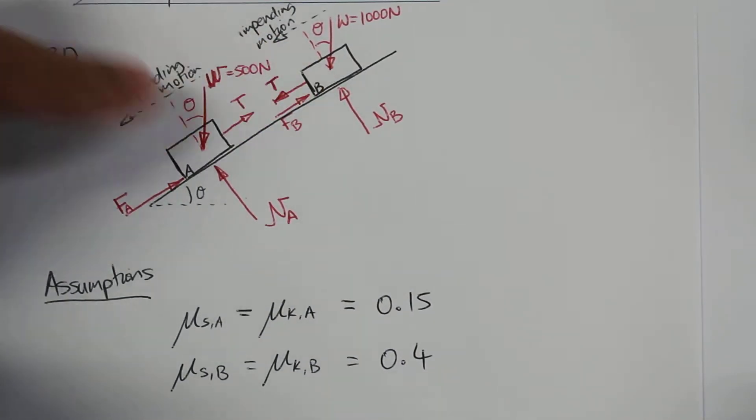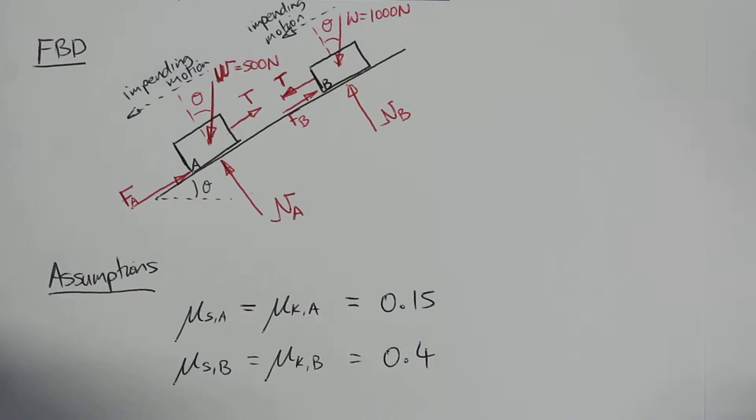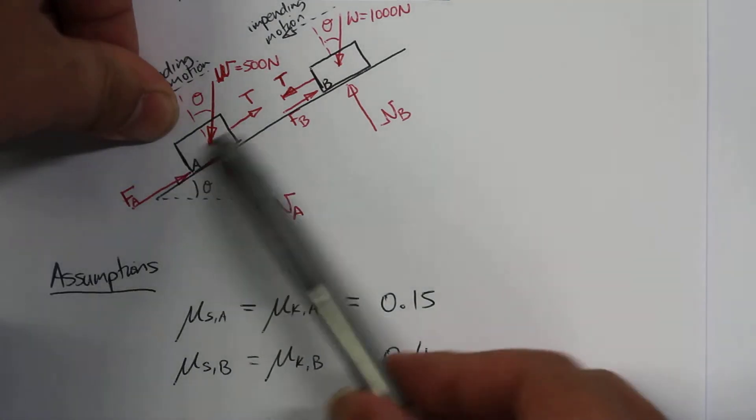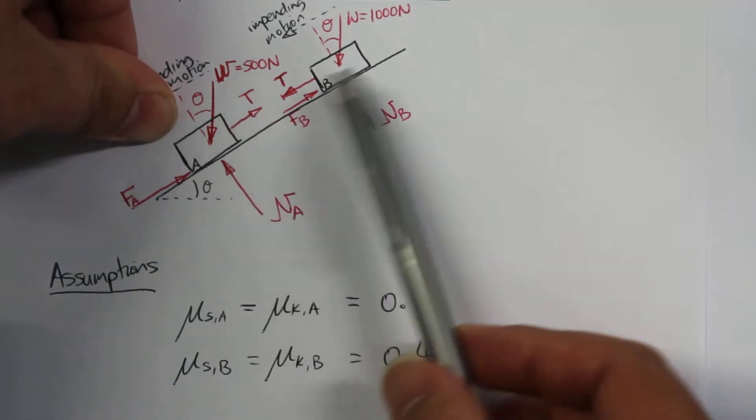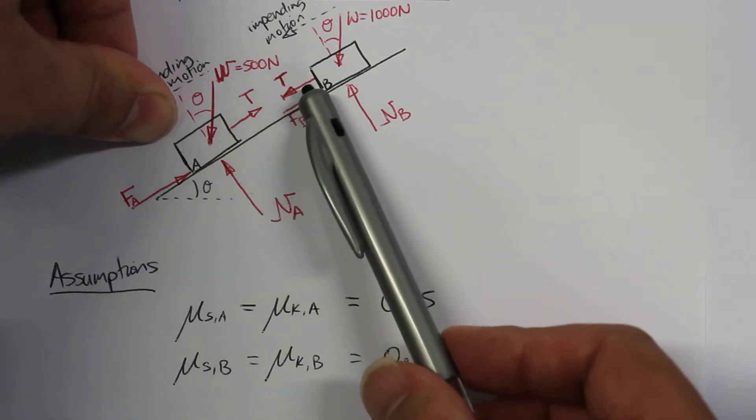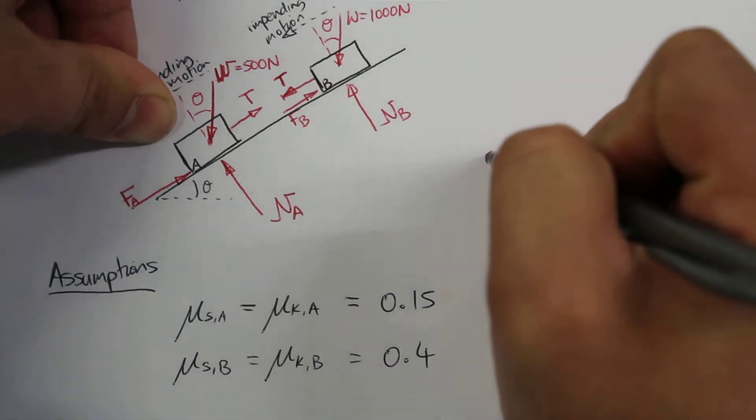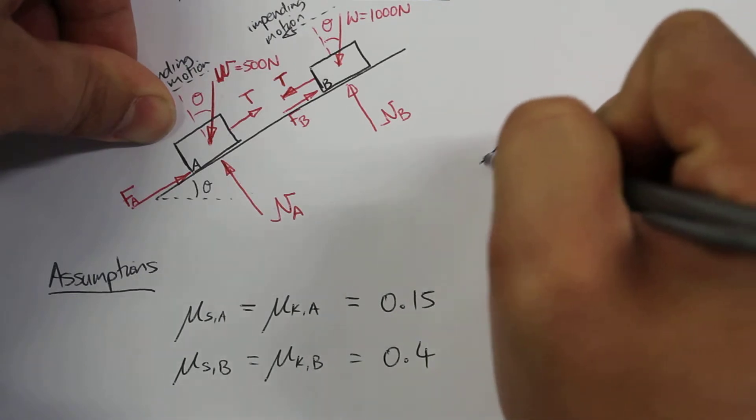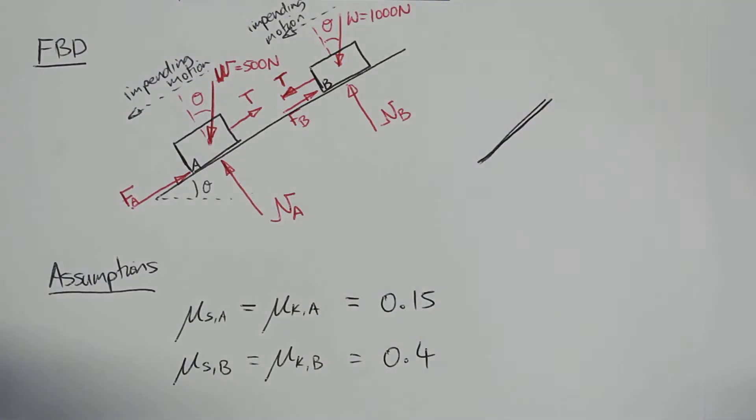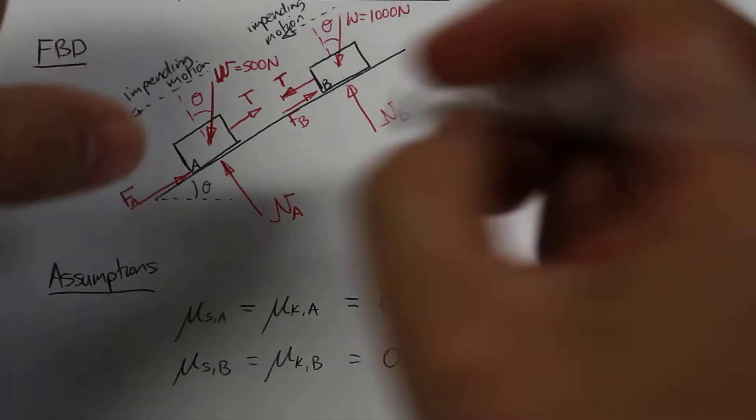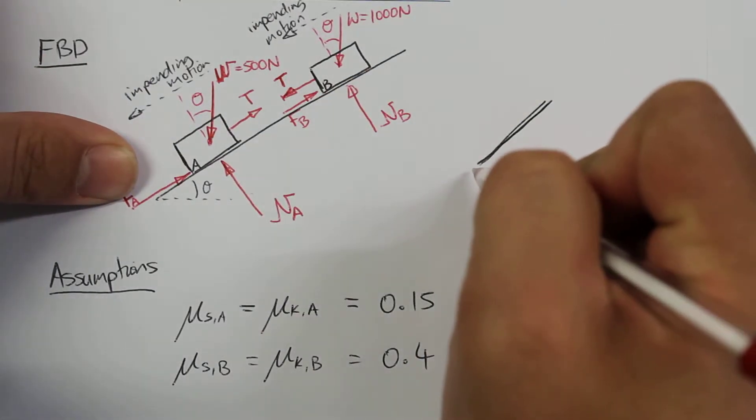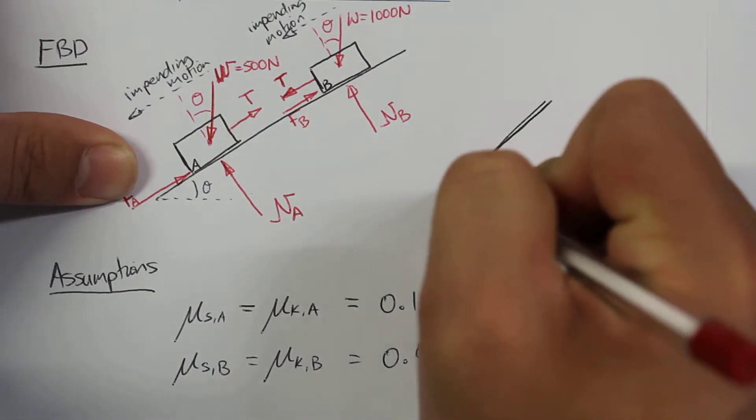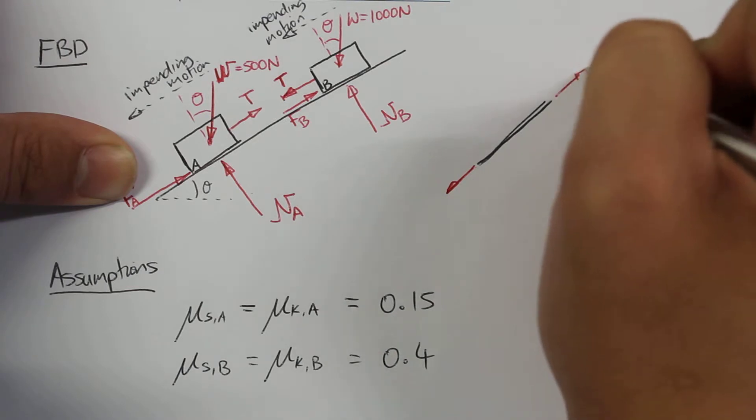The rope itself has a tension force, and we can see that for block A the tension is pulling up the incline, and for block B the tension is pulling down the incline. Just to show what's really happening, the rope is being pulled apart. For the rope to be pulled apart, there needs to be a force which pulls the rope apart.